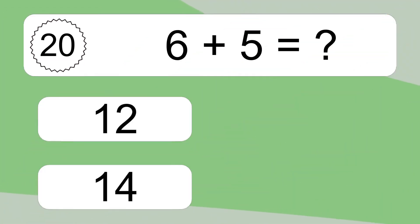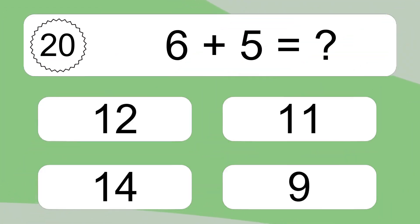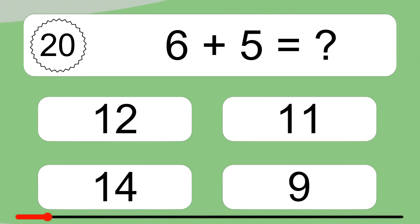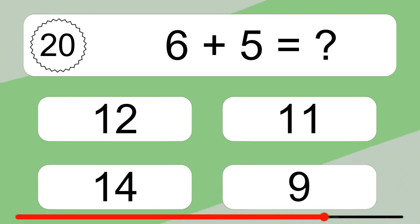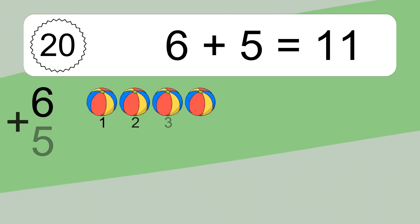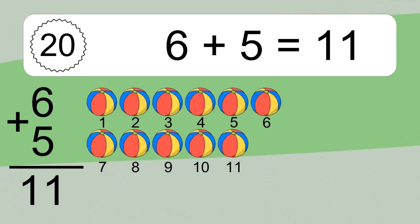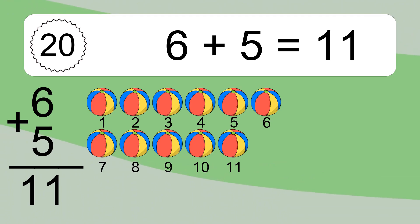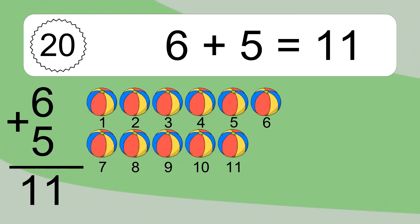6 plus 5 equals what? 6 plus 5 equals 11. Let's count it. 1, 2, 3, 4, 5, 6, 7, 8, 9, 10, 11.